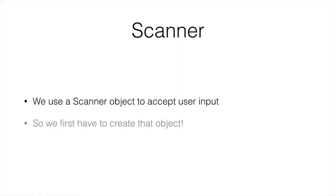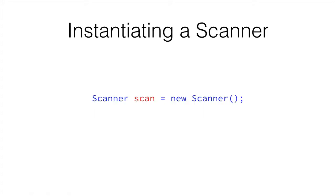But first of course we have to create that object. So how do we create a Scanner object? We create new objects with a keyword called new. So this would be an object of type Scanner — we call it scan. And this Scanner object, which is called scan, is a new Scanner. So you get a new scanner and we put it inside the variable called scan.